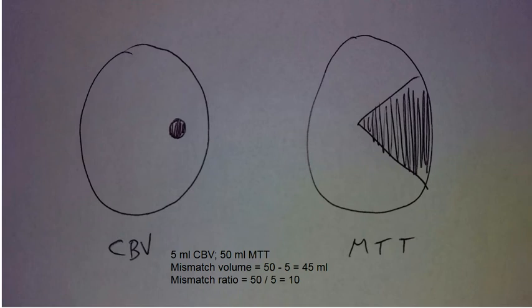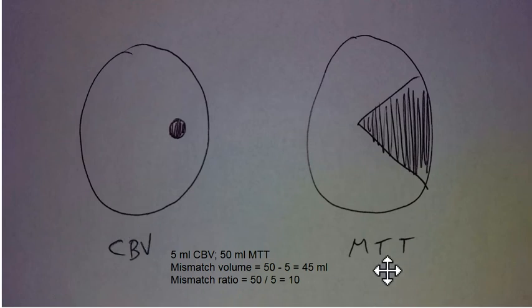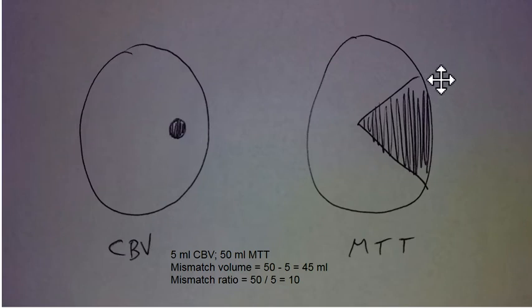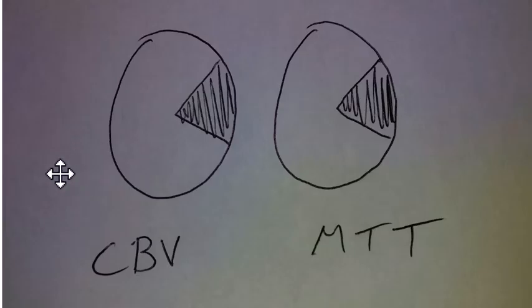Welcome back to part two of my talk on how to interpret CT brain perfusion studies. This figure shows the CBV map versus the MTT map. Notice there's a small defect on CBV and a moderate-sized defect on MTT. That shows this is a small core infarct with a moderate amount of surrounding potentially reversible ischemia.